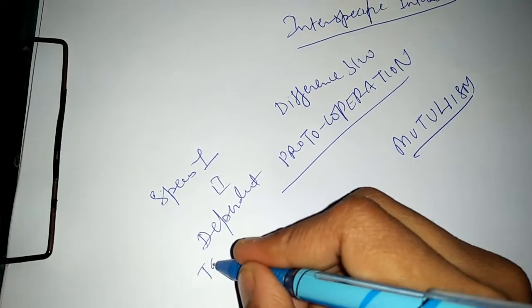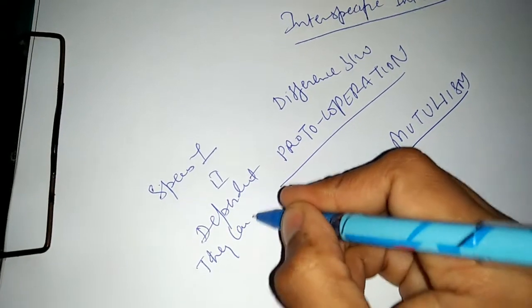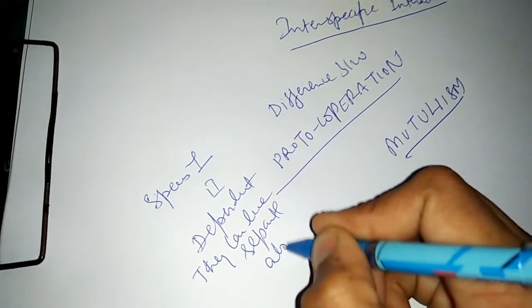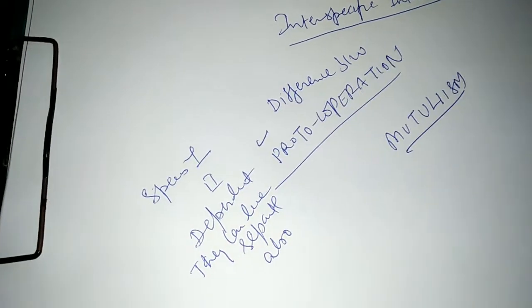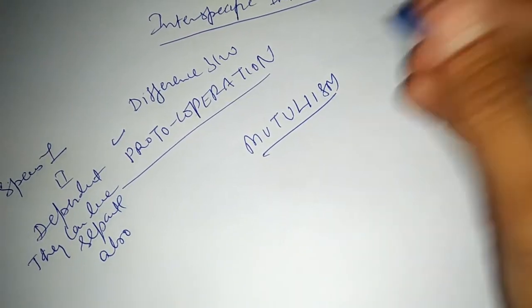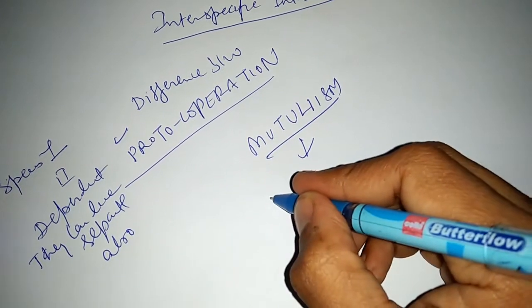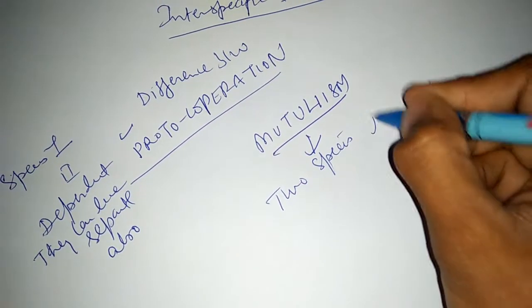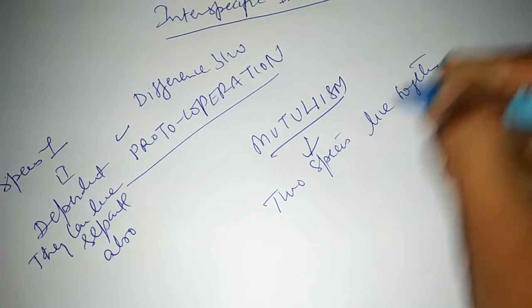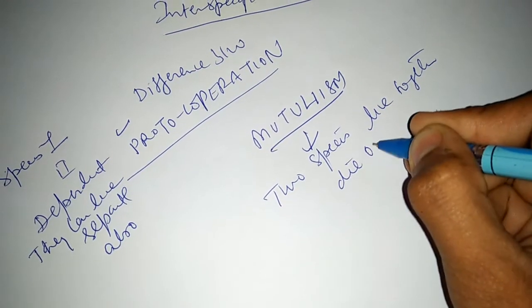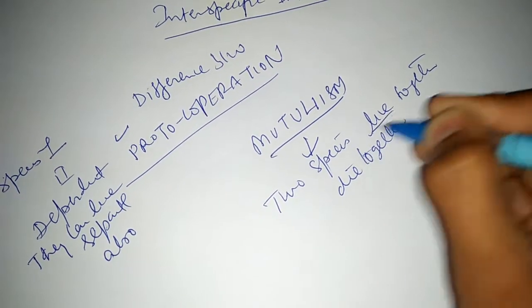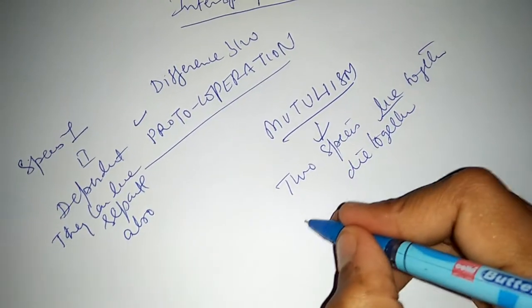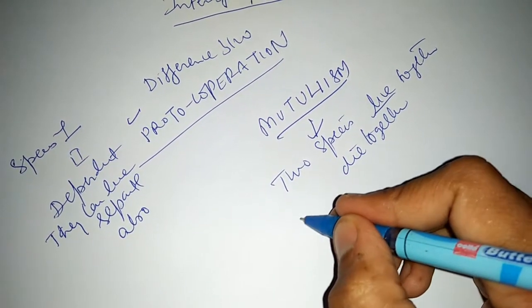This is called proto-cooperation, but on the other hand, in mutualism, two species live together and die together. They are mutually dependent on each other for food, shelter, and protection, and you cannot isolate them from each other.